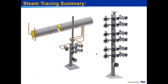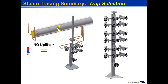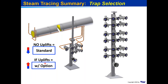To summarize trap selection: gravity feed with blue at the tip of the flow arrow — use a standard steam trap. Long horizontal runs with mixed steam and condensate at the tip — potential steam locking, use technology with a controlled steam lock release. Any uplift anywhere in the thermal circuit or lifting up to the steam trap — steam lock condition, select a trap with a steam lock release option.